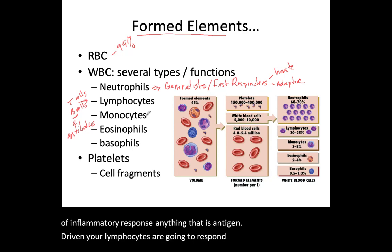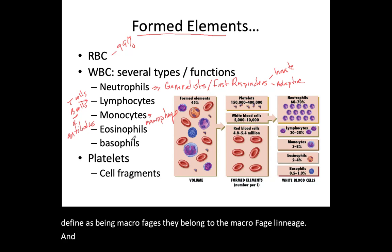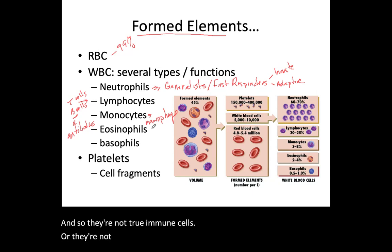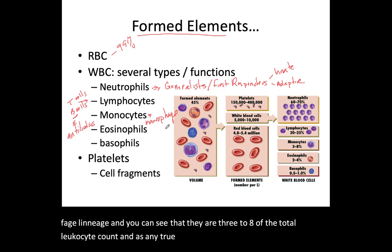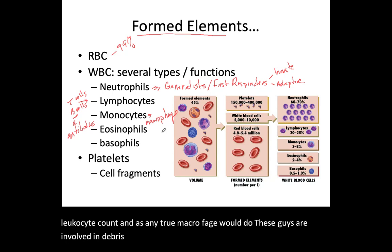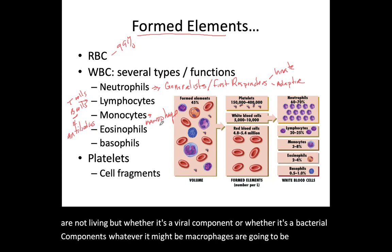Monocytes are defined as belonging to the macrophage lineage — they are part of the macrophage lineage, making up 3% to 8% of the total leukocyte count. As any true macrophage would do, these are involved in debris cleanup and damaged tissue cleanup wherever there is a high amount of cellular death, whether it is viral components or bacterial components — macrophages are going to be involved in that cleanup.